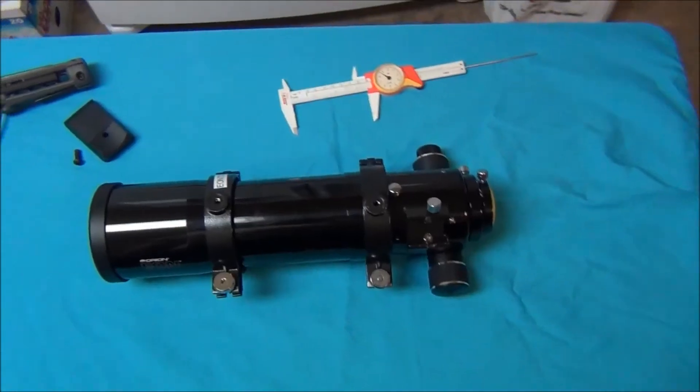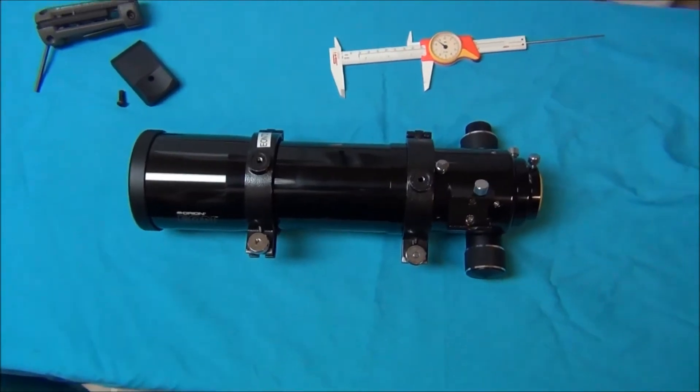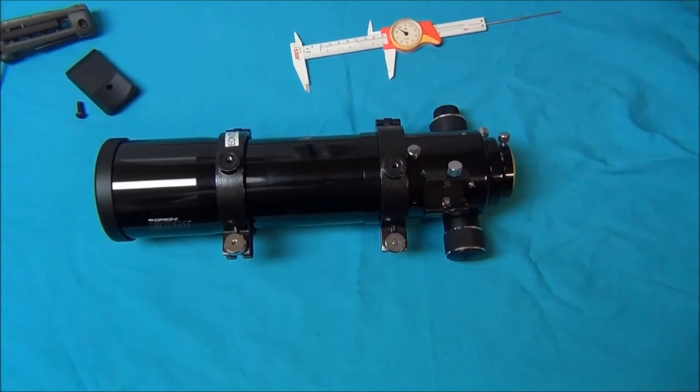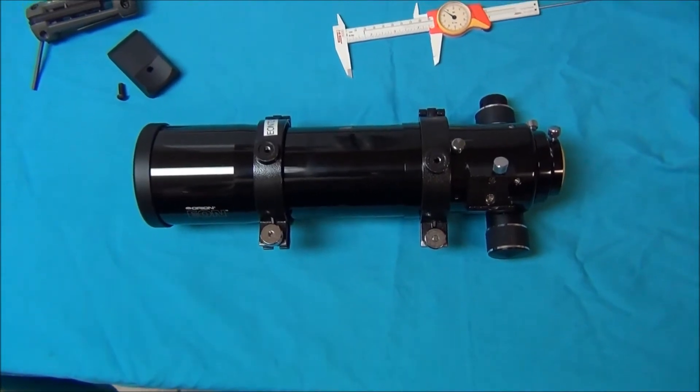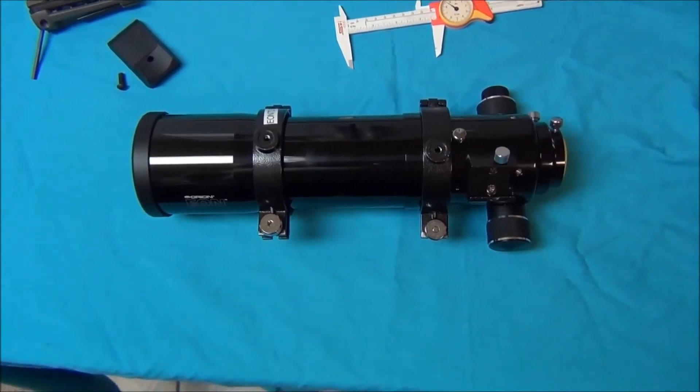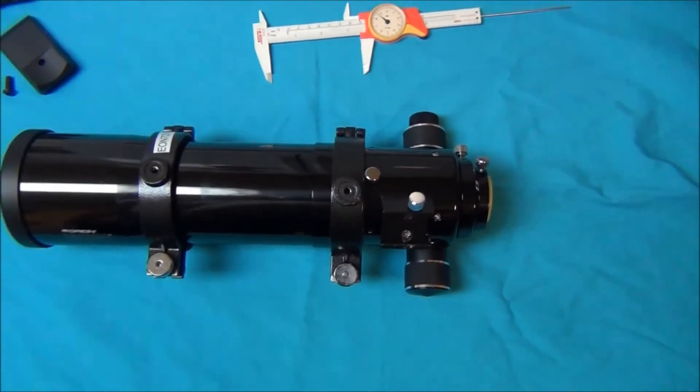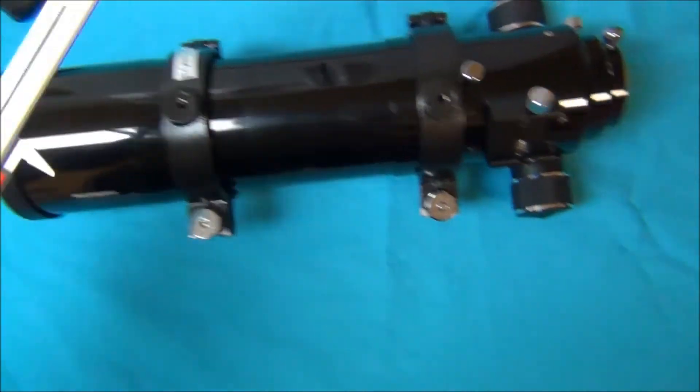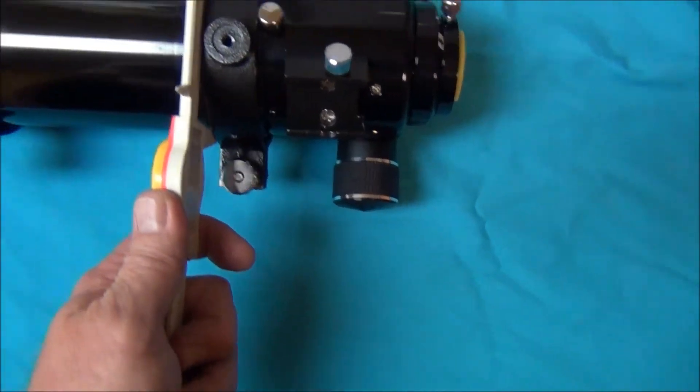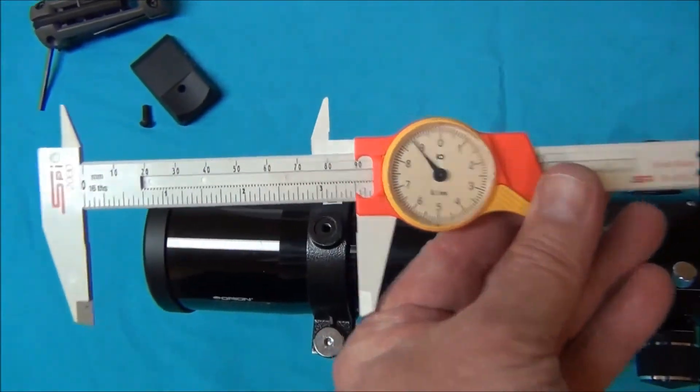Paul left a comment on the channel asking about the rings, the solid mounting rings for like the EON 72 or the Astrotech 72 millimeter telescope. What you need to do is measure the outside diameter of it, and it's pretty close to about 90 millimeters.